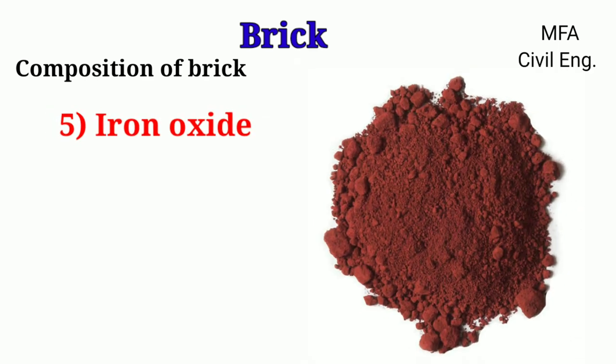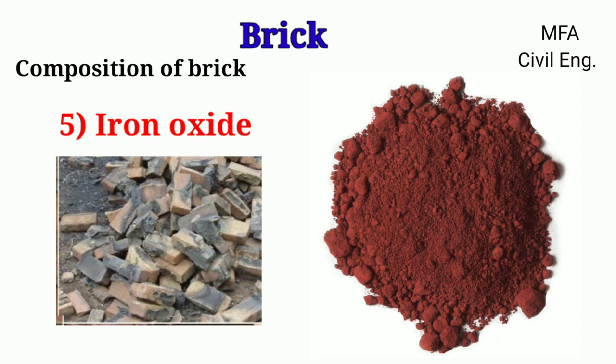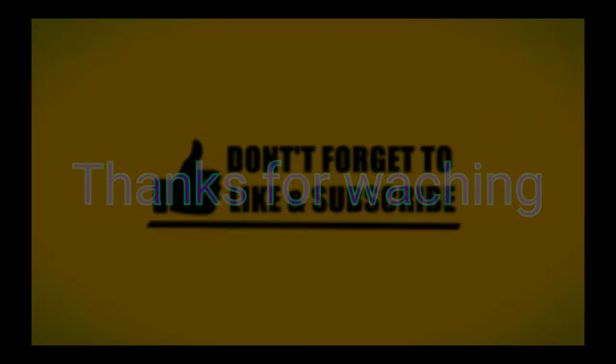Iron oxide also acts as a flux; a very small amount of iron oxide helps to fuse lime and sand during burning. It also binds the particles of the brick together so that the brick becomes hard and strong. It imparts a red color to the brick, but excess iron oxide makes the brick dark blue in color. Thank you for watching.